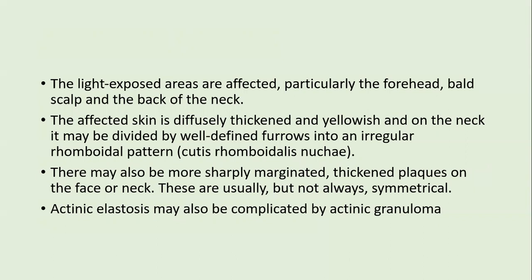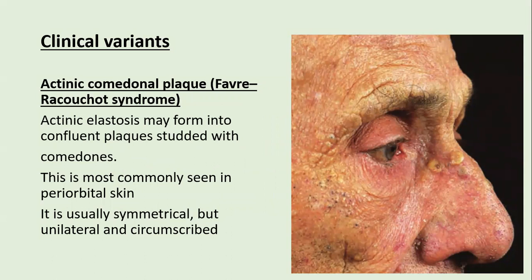Actinic elastosis may be complicated by actinic granuloma. Clinical variants include actinic comedonal plaques, or Favre-Racouchot syndrome. In this variant, actinic elastosis forms confluent yellow plaques studded with comedones, most commonly seen in periorbital skin. They are usually symmetrical, but unilateral or circumscribed forms are also seen.